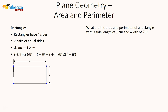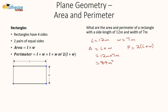What are the area and perimeter of a rectangle with a length of 12 meters and a width of 7 meters? The area is length times width: 12 meters times 7 meters equals 84 square meters. The perimeter is 2 multiplied by the sum of the length and width: 2 times (12 plus 7) equals 2 times 19, which is 38 meters.